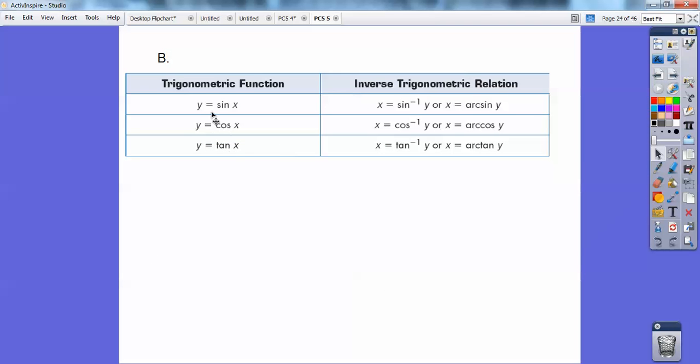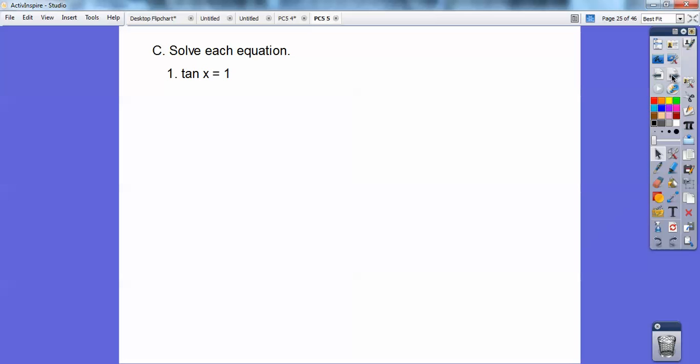All right, so if you have these trig functions, Y equals sine of X, then the inverse is written sine to the negative 1 of Y or arc sine of Y. So if you have Y equals cosine of X, then you use cosine to the negative 1 of Y or arc cosine of Y. Same goes with tangent right there. Just some more right there.